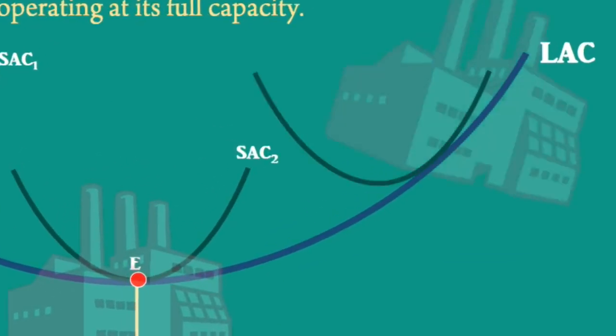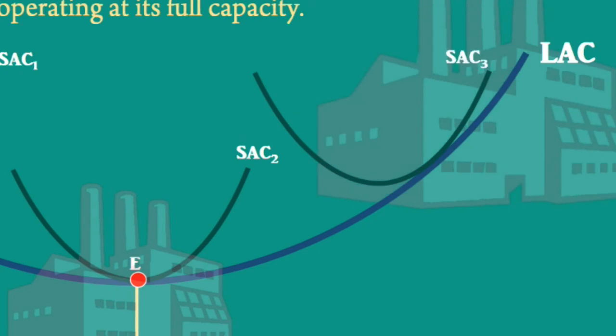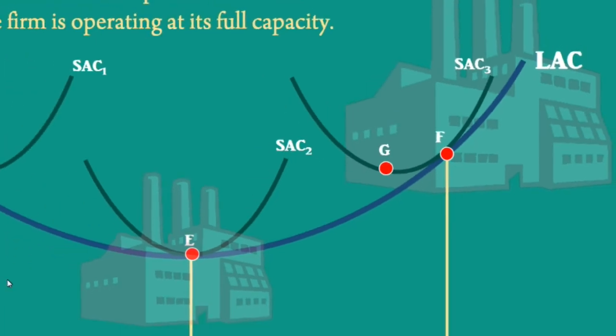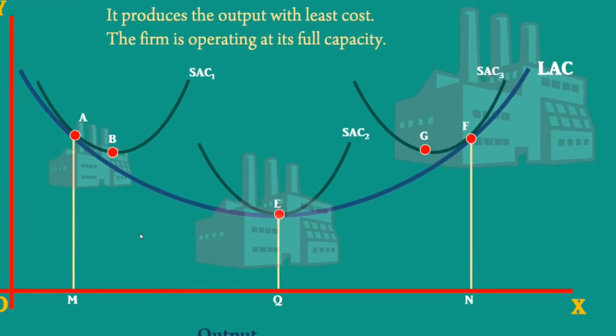Look at the plant curve SAC3 on the right side of Long Run Average Cost Curve. It is tangent at point F. It is on the rising side of both the curves. Minimum point of SAC3 is G. Operating point F lies to the right of G.